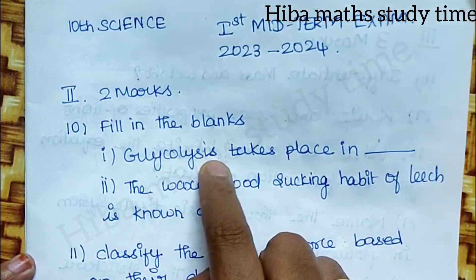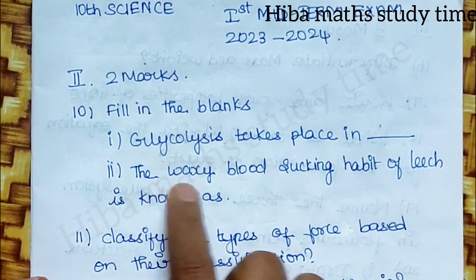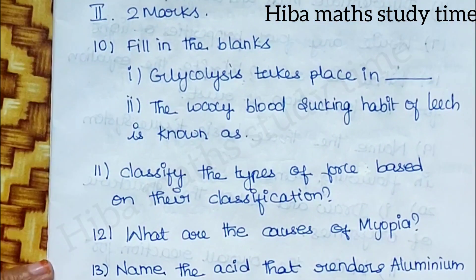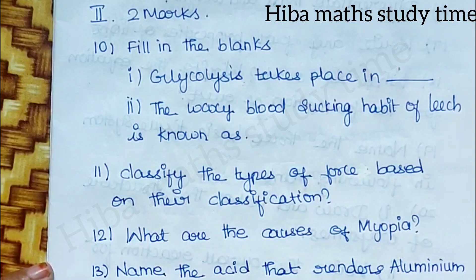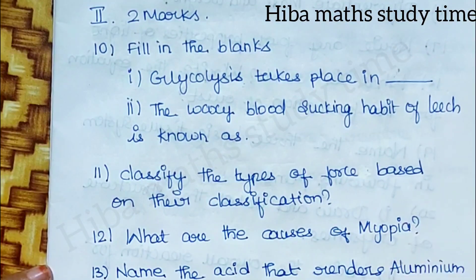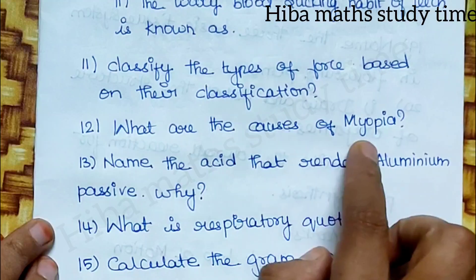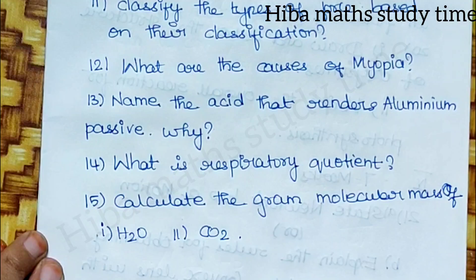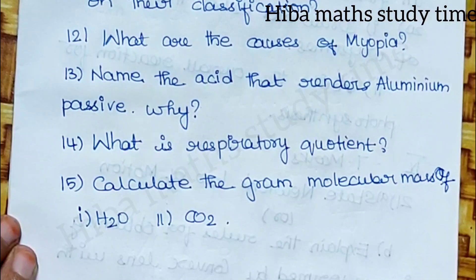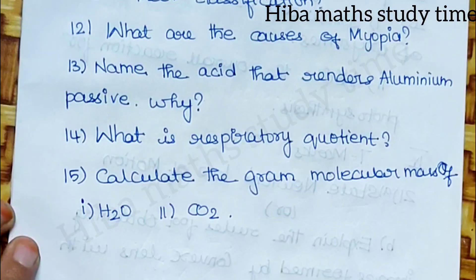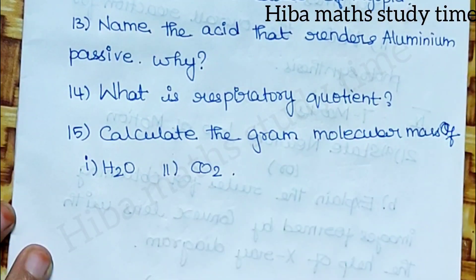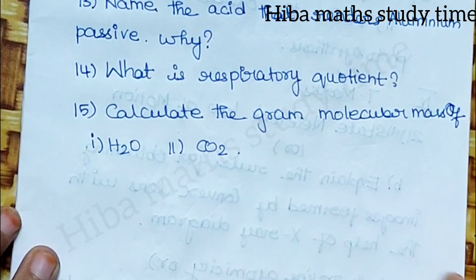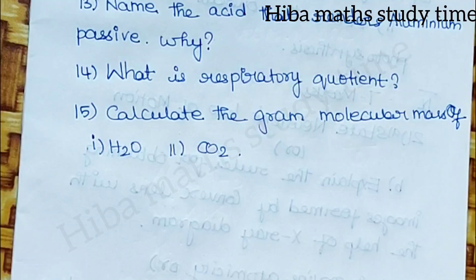What are the causes of myopia? Name the acid. Aluminium passive — why? Give the reason. Name it. What is the respiratory quotient? Calculate the gram molecular mass of H₂O and CO₂. These are all 2-mark questions. So we'll start with those. Next, 3 marks.